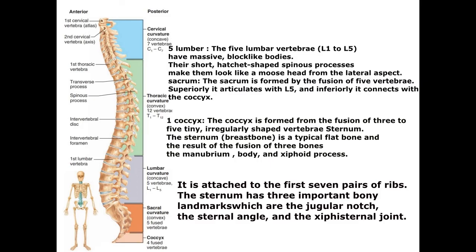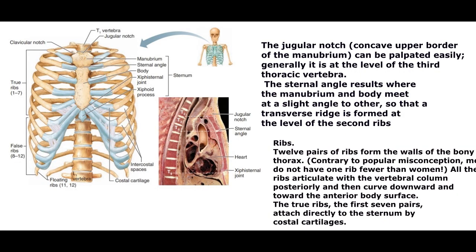Sternum. The sternum, or breastbone, is a typical flat bone and the result of the fusion of three bones: the manubrium, body, and xiphoid process. It is attached to the first seven pairs of ribs. The sternum has three important bony landmarks: the jugular notch, the sternal angle, and the xipho-sternal joint. The jugular notch is the concave upper border of the manubrium, can be palpated easily, and is generally at the level of the third thoracic vertebra. The sternal angle results where the manubrium and body meet at a slight angle, forming a transverse ridge at the level of the second ribs.